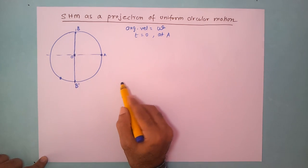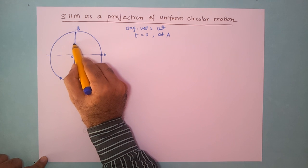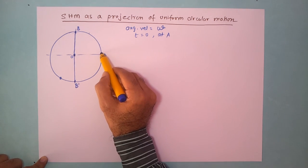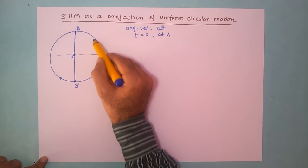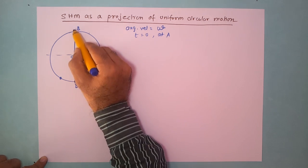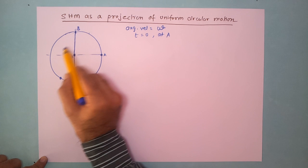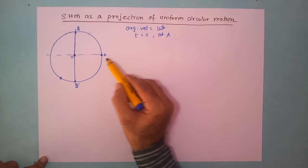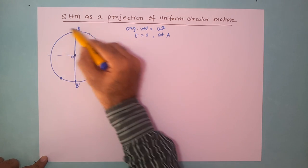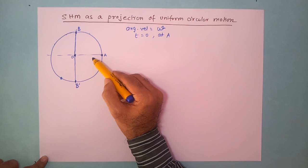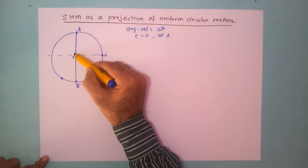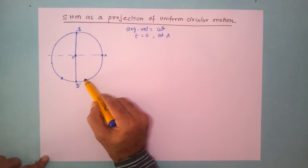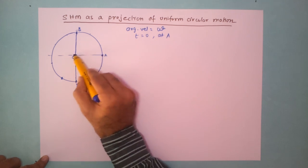When the object is at location A, the projection is at point A. As it moves along the circle, the projection shifts along the diameter. When it completes a quarter rotation, the projection has moved from O to D. Continuing, as it reaches the halfway point on the other side, the projection moves toward B and then back toward O. After half a rotation, the projection has moved from O to B and back to O.